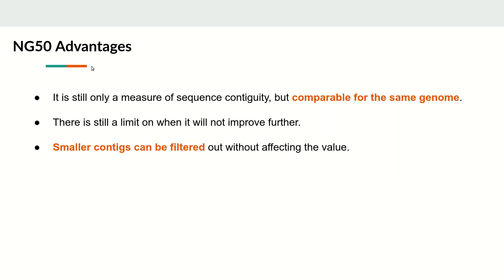This bias does not affect NG50 — smaller contigs can be filtered out without changing the NG50 value, because the genome size reference remains constant. However, NG50 shares some limitations with N50: it will not improve once the assembly reaches a high-quality state, and it still only measures sequence contiguity without assessing the correctness of the assembly.